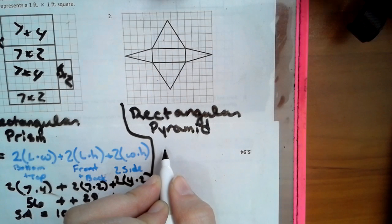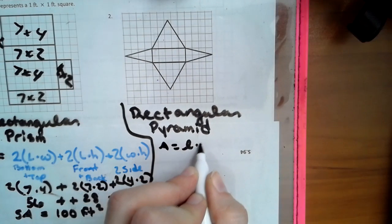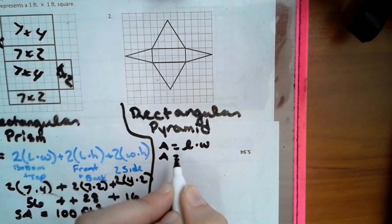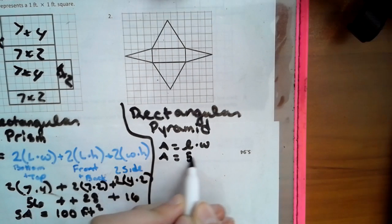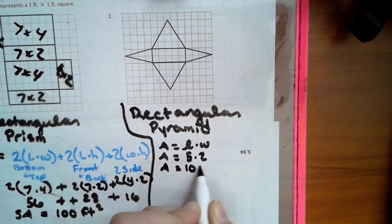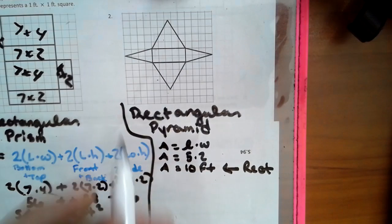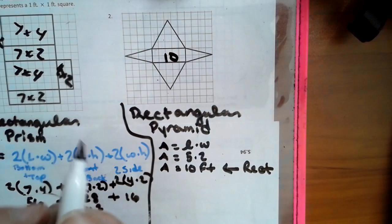I'm going to start with our rectangle. Area equals length times width. Area equals 5 times 2 — area equals 10 feet squared. And that was for the rectangle. So this is 10.